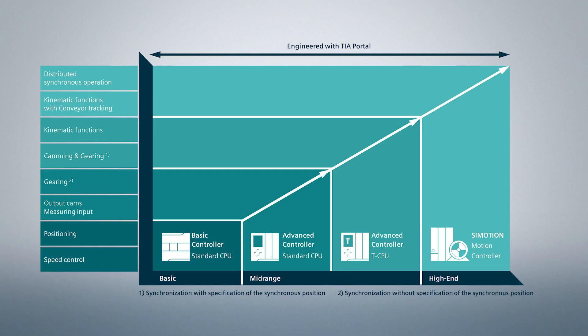Technology objects are an integral part of every Simatic controller. Functionally, they are divided into counting and measuring, PID, and motion control.